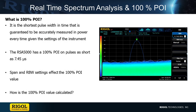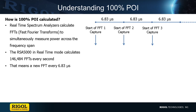Let's take a quick look at how the 100% POI, or probability of intercept, is calculated on a real-time spectrum analyzer. Tektronix's RSA5000 has a 100% POI on pulses as short as 7.45 microseconds — but how do we know that? A real-time spectrum analyzer uses FFTs, or fast Fourier transforms, to simultaneously measure power across the span. The RSA5 calculates its FFT every 6.83 microseconds.